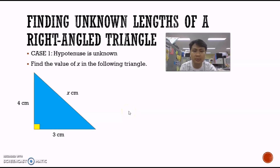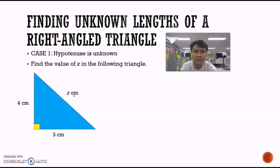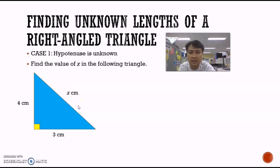Let's take a look at an example now. We have a right angle triangle. In order to find the unknown, we need to have two other values given to us in order to apply Pythagoras' Theorem. We do have two values given. This length is facing the 90 degree, so we will mark this line as the hypotenuse of the right angle triangle.